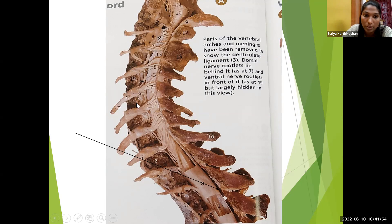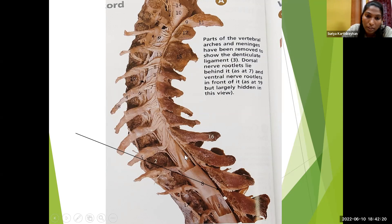We can see the body of vertebrae, the vertebral foramen — where the spinal cord is located — and the nerve rootlets forming the spinal trunk. The outermost covering is the dura mater, then arachnoid mater, with pia mater adherent to the spinal cord. Between the roots, we can see the denticulate ligament — the tooth-like projections of pia mater.